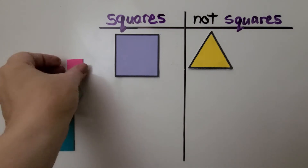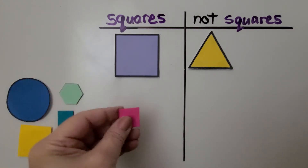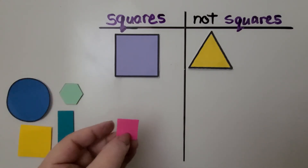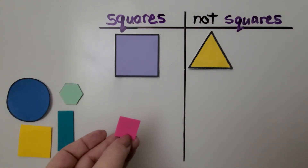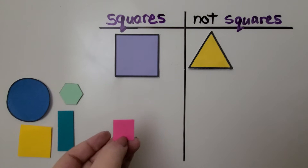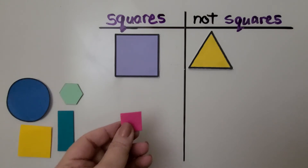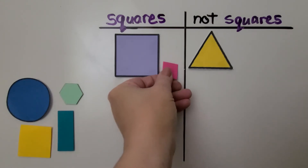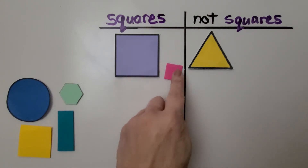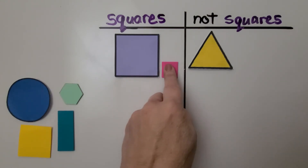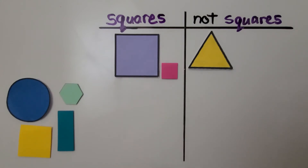Is this a square? I see four sides. I see four vertices. Yes, that's a square. We can put it on this side with the other square.